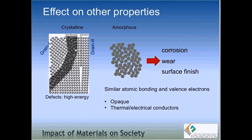The other properties of interest are optical appearance. In terms of optical appearance, amorphous metals look very similar to crystalline metals: they are not transparent, they are opaque, and they are also good thermal and electrical conductors. The reason for this similarity is that amorphous metals have similar atomic bonding to crystalline metals — they also have a lot of free valence electrons. Properties predominantly dictated by atomic bonding or electrons don't change much when you go from crystalline to amorphous structure.